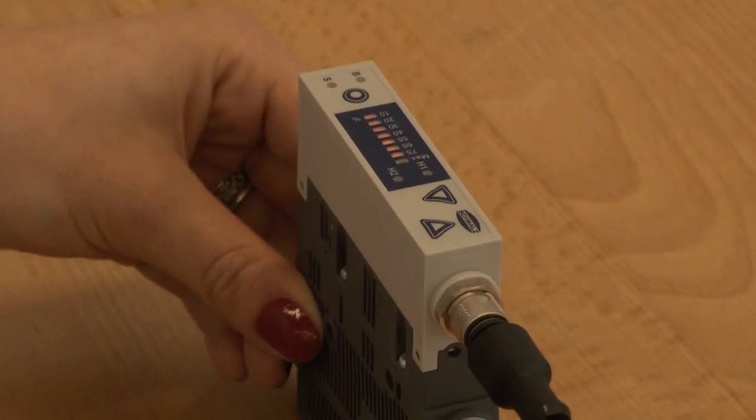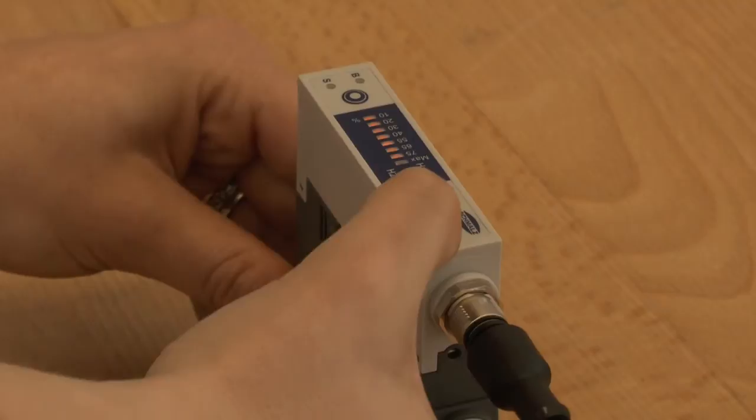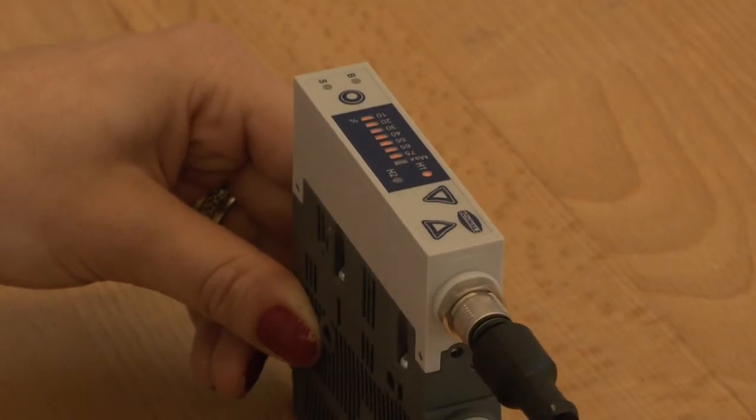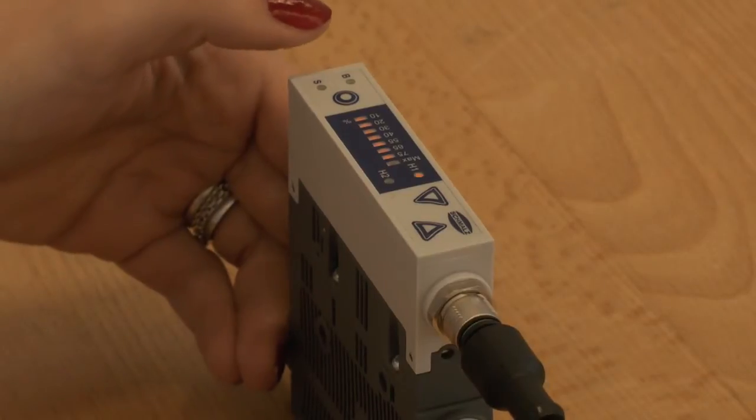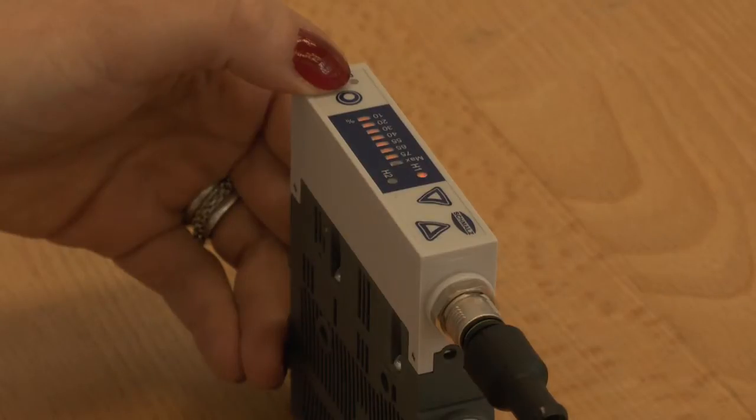H1 is blinking and can be set by pushing up and down buttons. A value of 75% corresponds to a vacuum value of 750 mbar.